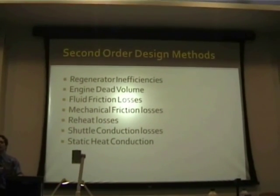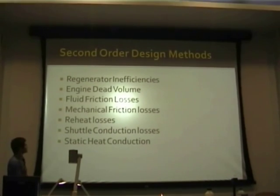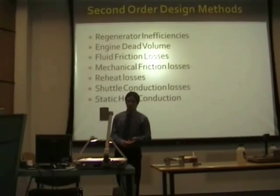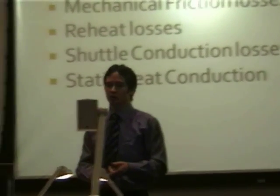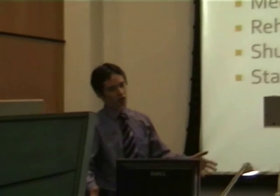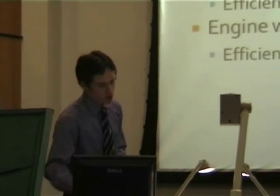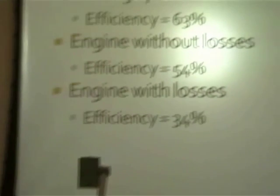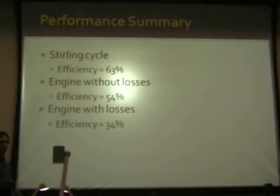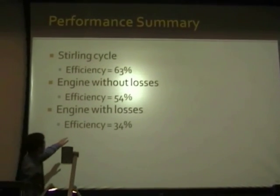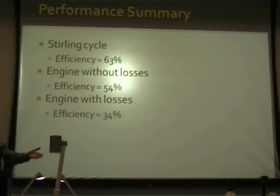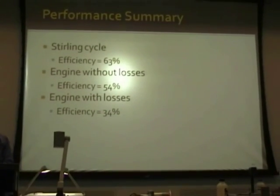Second order design methods — without going into the maths, I looked at regenerator inefficiencies, the inclusion of engine dead volumes which are unavoidable in realistic engines, mechanical and fluid friction losses, reheat losses, shuttle conduction, and static heat conduction losses. The performance summary shows efficiency getting lower and lower as we remove the assumptions of the original cycle analysis. The theoretical maximum efficiency for this engine is 34%, and what I want to achieve is to measure the actual efficiency.